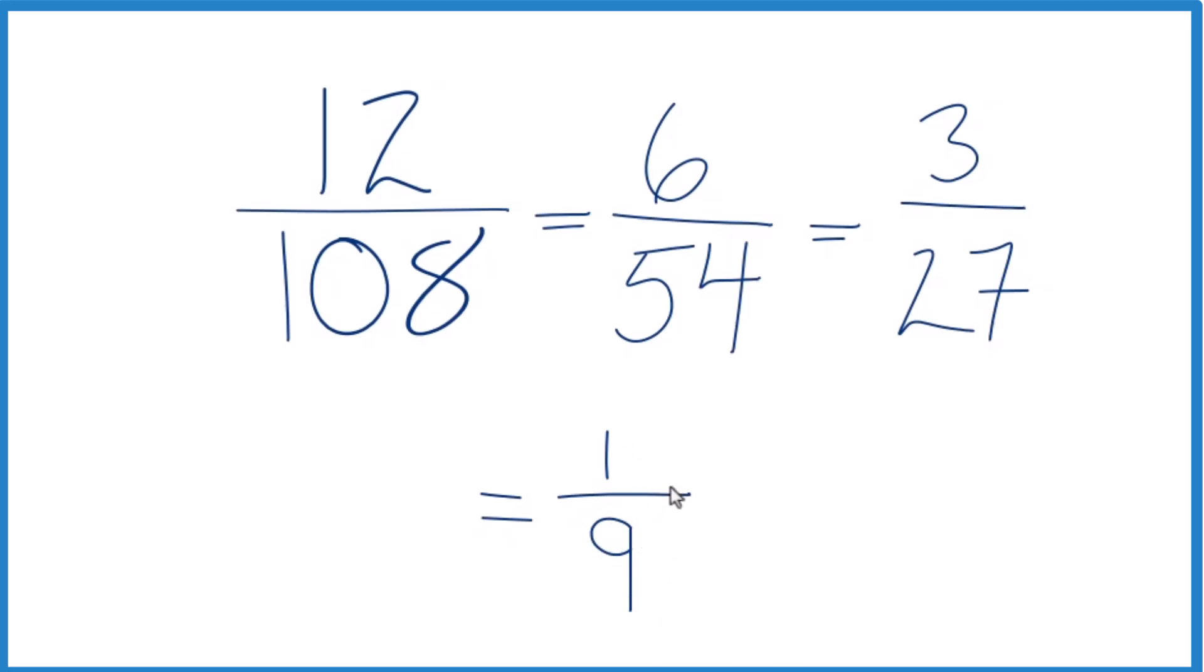You could have done this a lot quicker if you knew that 12 went into 108 nine times, and your greatest common factor would be 12. You could just divide 12 by 12 and get 1, and 108 divided by 12, that would give you 9. That would be a more direct route.